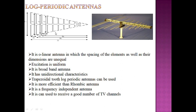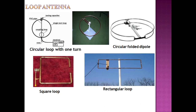The log periodic antenna is a nonlinear antenna because the length of the dipoles as well as the spacing between the dipoles are not equal — that is why it is called a log periodic antenna. The extension is uniform. It is a broadband antenna, also used to receive multiple TV channels, and is more efficient than the rhombic antenna. It has unidirectional characteristics.